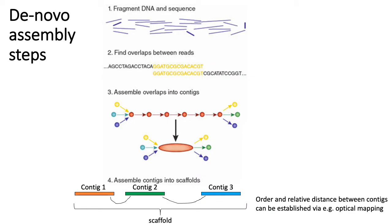The general process of assembly basically boils down to: first, you take your genome, fragment it into smaller pieces, then sequence it and get a bunch of reads, whether from short-read or long-read sequencing technologies. At the end of the day, both of those technologies give you a set of reads.